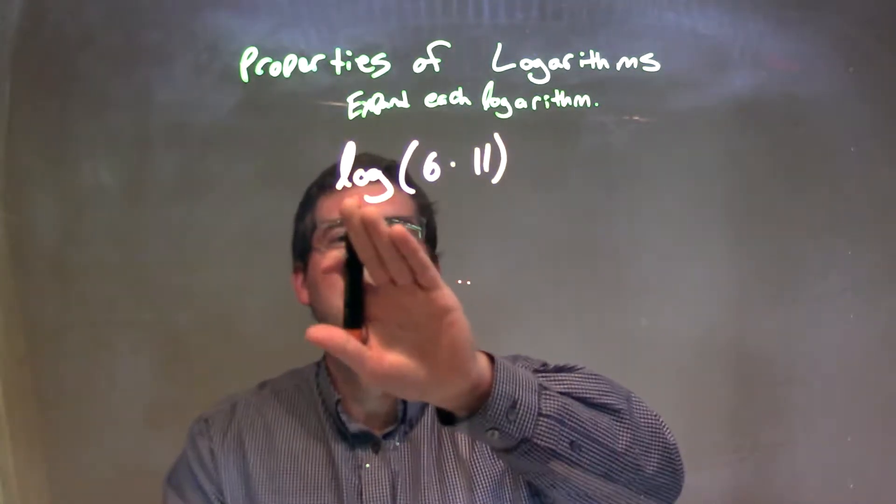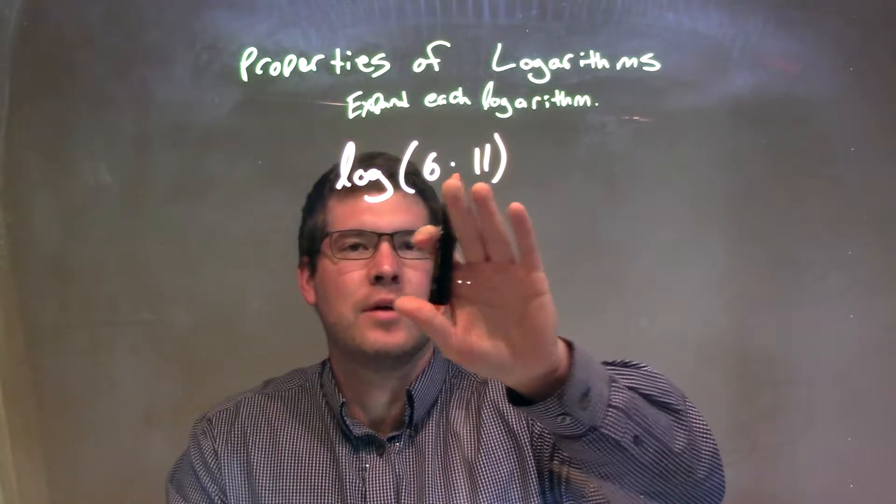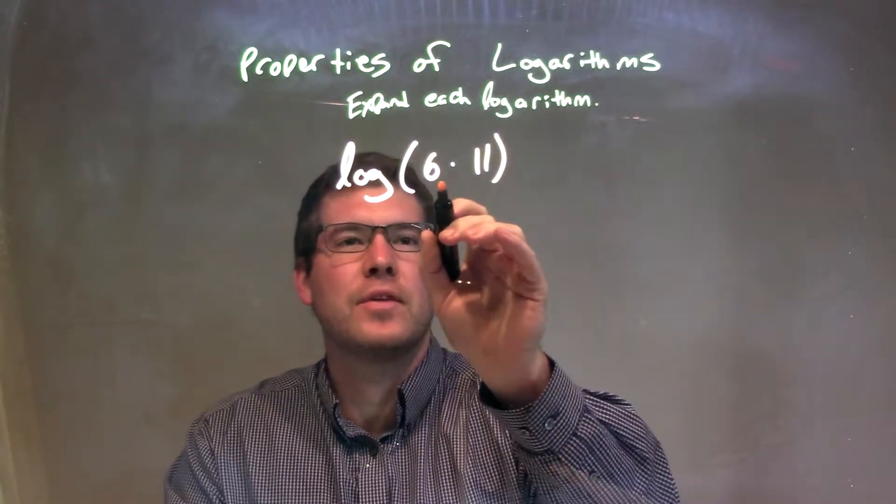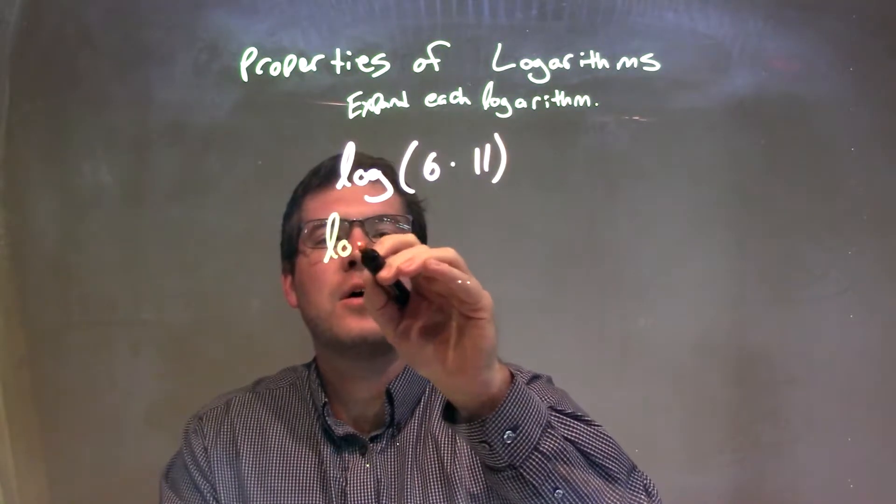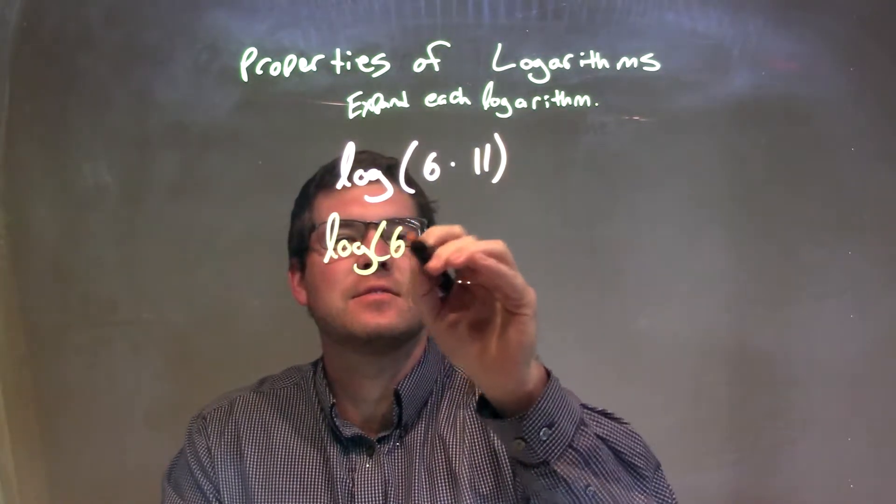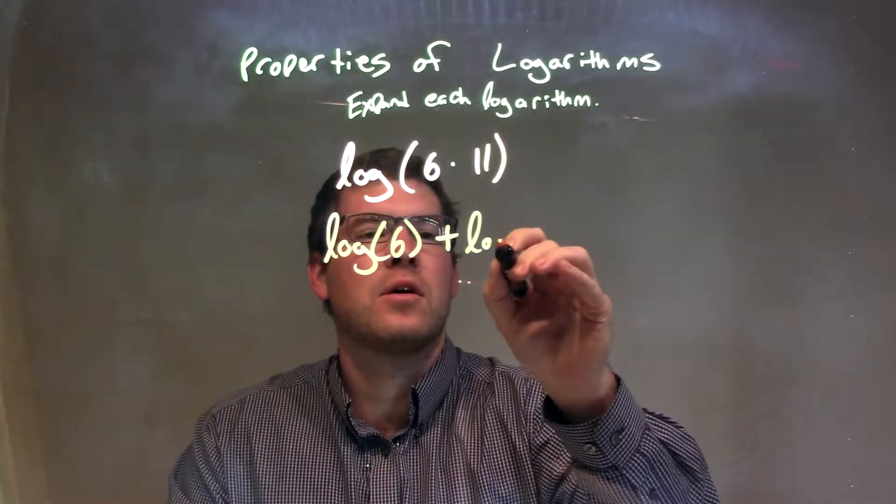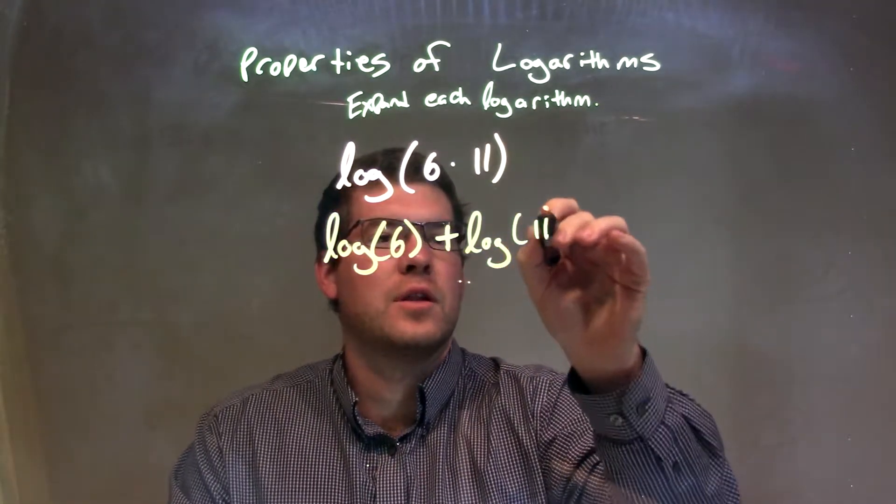So I'm going to take that multiplication right there, and I can separate the 6 and 11 to be two different logarithms. So we have the log of 6 plus the log of 11.